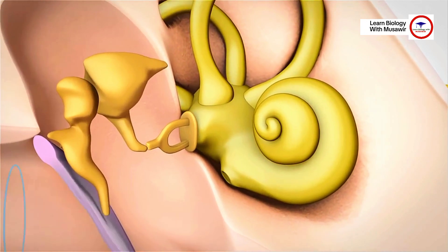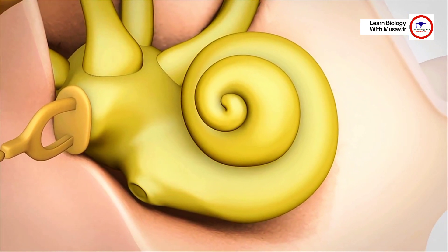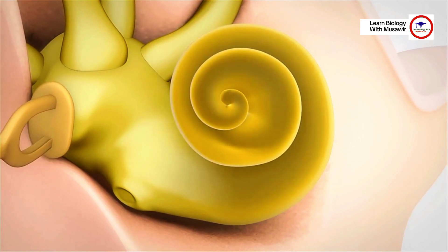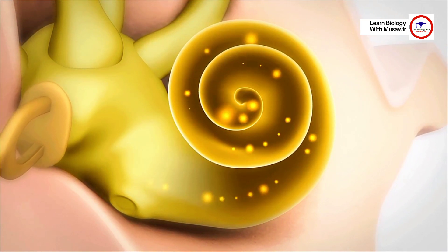Within the inner ear, the cochlea plays a central role. It is here that the mechanical energy of sound is converted into complex electrical signals, which are then passed on to the brain.